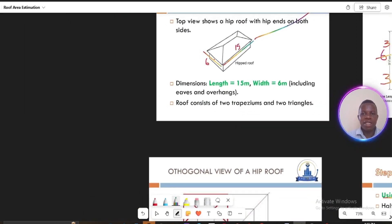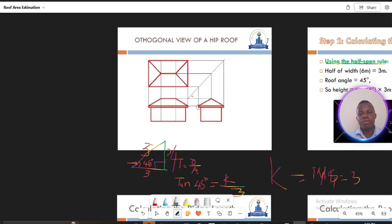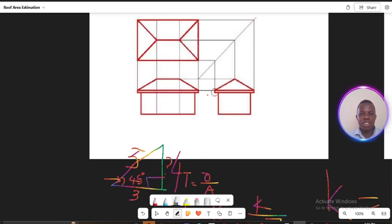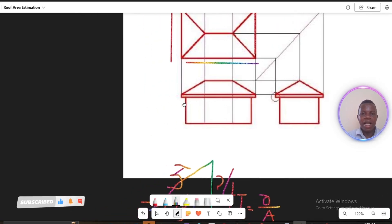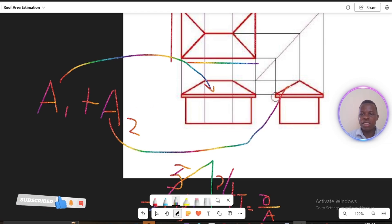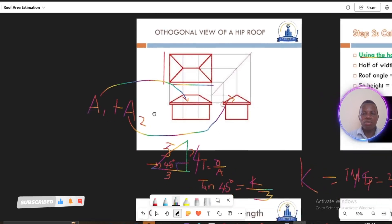The key concept is that you have to understand that this area of a roof has two shapes: a trapezoidal shape from the longer side, that's the length side, and then it has a triangle from the width side as you can see. So we just have to calculate Area 1 plus Area 2. Area 1 here I'm referring to this area, and Area 2 I'm referring to this area here of this triangle.